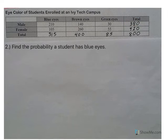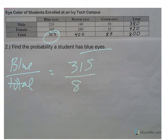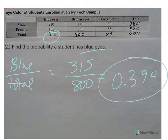Number two: find the probability that a student has blue eyes. We just care about blue-eyed people — blue over the total. I have 315 blue eyes out of 800. It's less than half, so it makes sense that the decimal is less than 0.5.